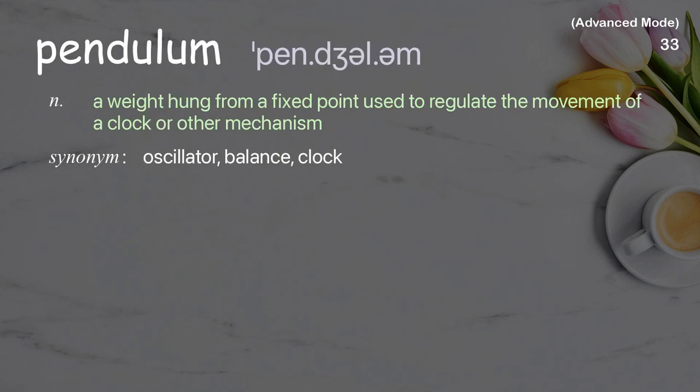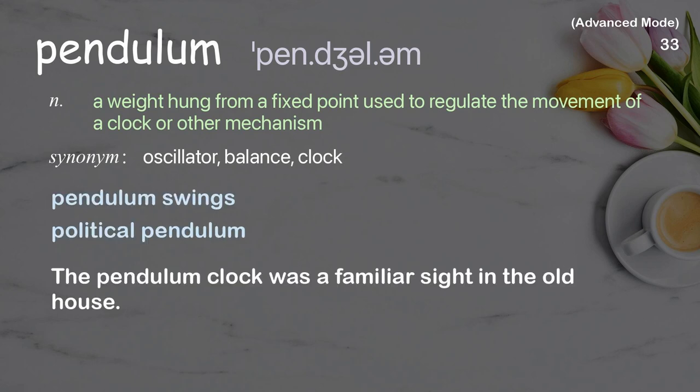Pendulum. A weight hung from a fixed point used to regulate the movement of a clock or other mechanism. Examples: pendulum swings, political pendulum. The pendulum clock was a familiar sight in the old house.